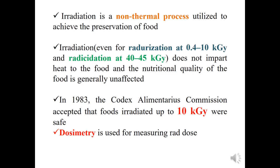Irradiation is a non-thermal process utilized to achieve the preservation of food, while microwave heating is a thermal process. Radarization is a process of giving radiation at a dose of 0.4 to 10 kilogray, while radicidation is at the range of 40 to 45 kilogray.